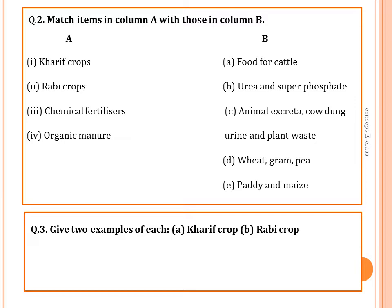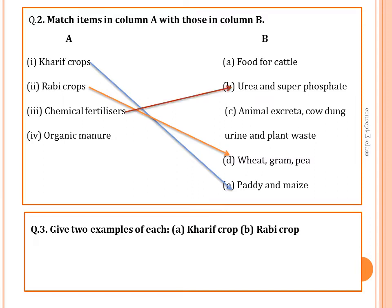Kharif crops are paddy and maize. Rabi crops are wheat, gram, and pea. Chemical fertilizers match with urea and super phosphate. Organic manure is animal excreta — waste of animals and plants.